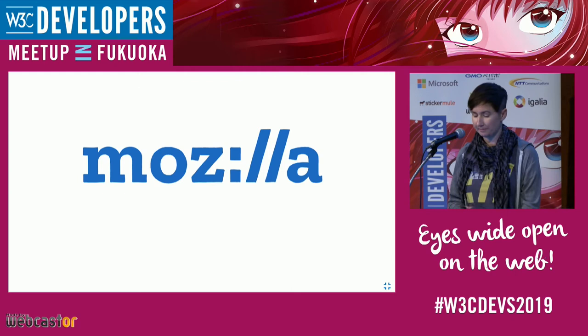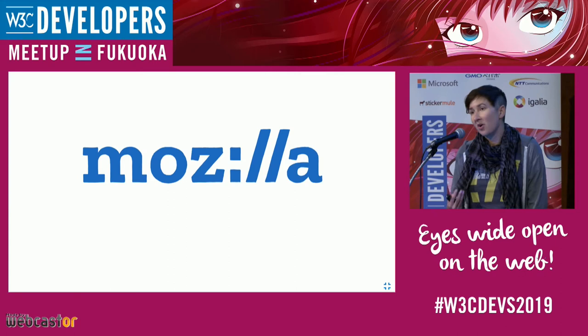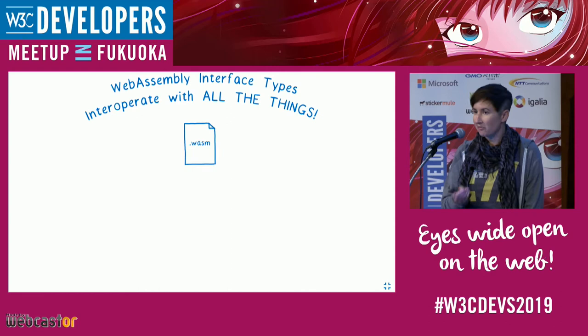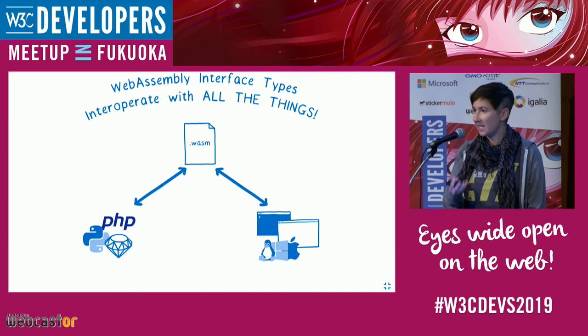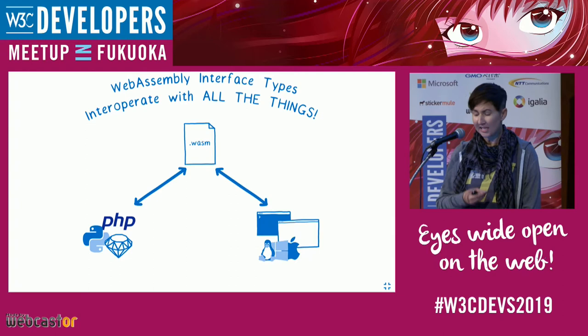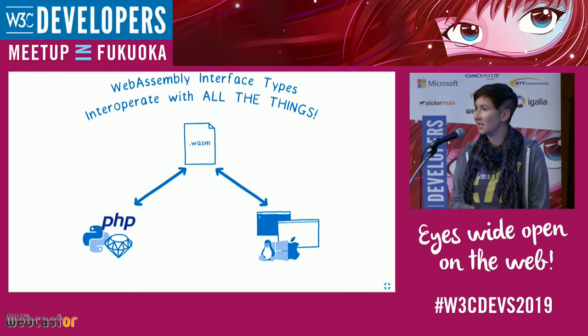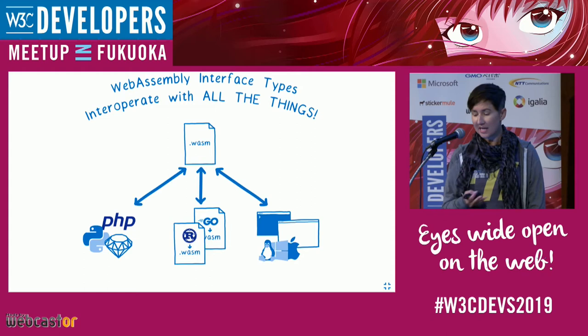With this we're making it possible to interoperate with all the things. For example, taking a WebAssembly module that you can run on the web and then running that very same module using rich APIs and high-level types when you talk to a Python, Ruby, or PHP module running in its own runtime. And then using that same module with the same API and the same high-level types when talking directly to the host or the operating system — even though the types used to talk to the OS are different from those in the Python runtime.